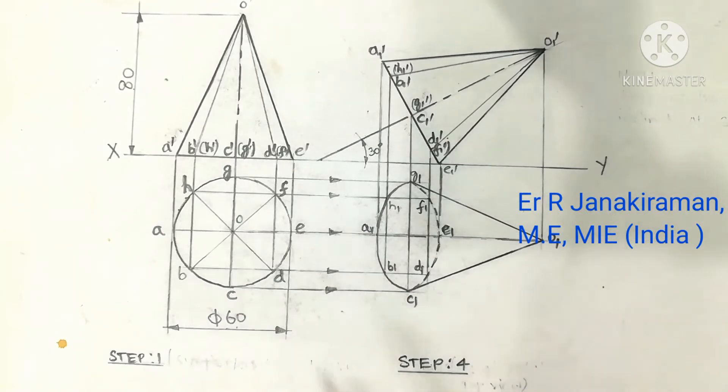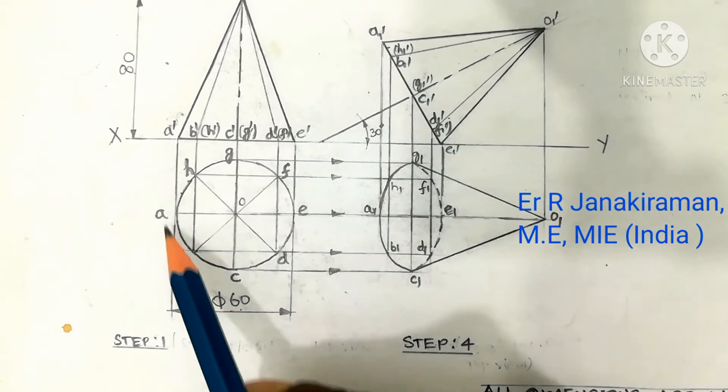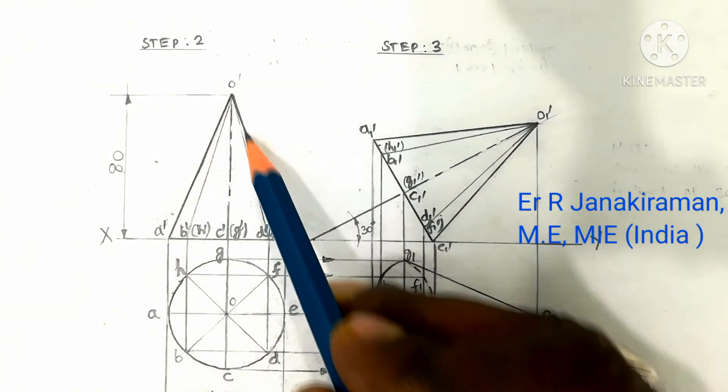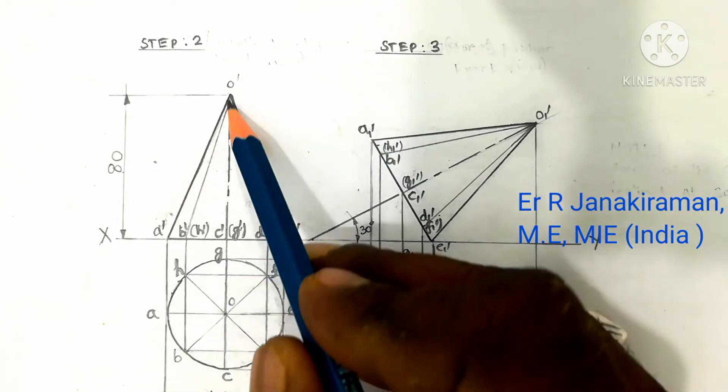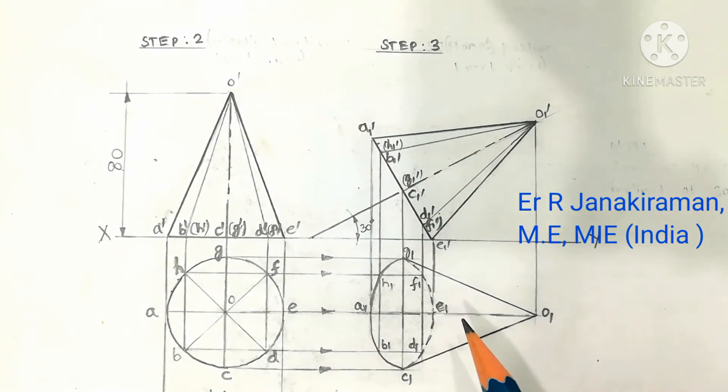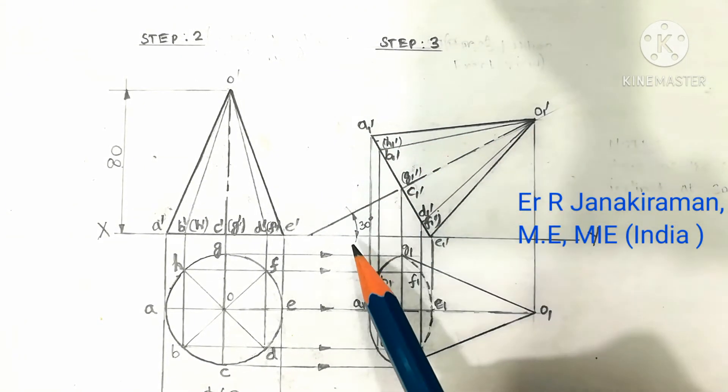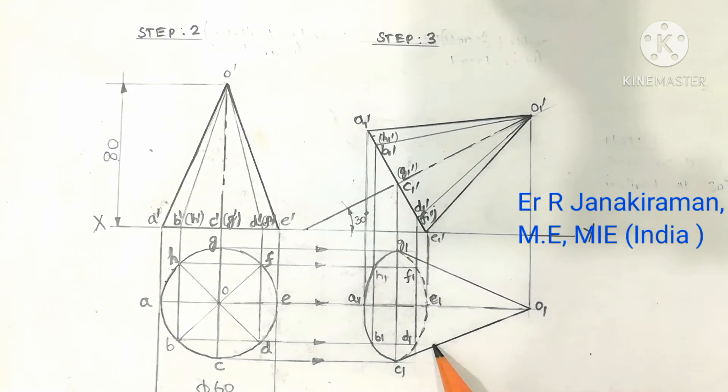This is step 1 diagram, step 1 diagram is a circle and step 2 triangle will be the front view. The triangle shape is the front view. Third step is to draw this diagram inclined to HP at an angle of 30 degree and the corresponding top view is shown here.